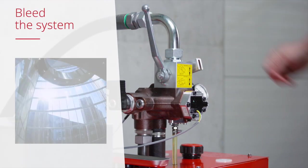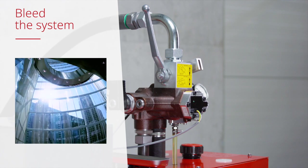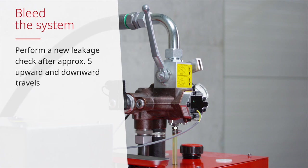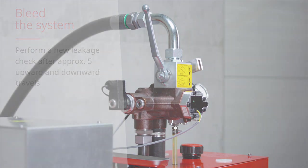To bleed the system, perform a downward travel or, with the ball valve closed, perform a return upward travel for 10 seconds. Perform a new leakage check after approximately 5 upward and downward travels.